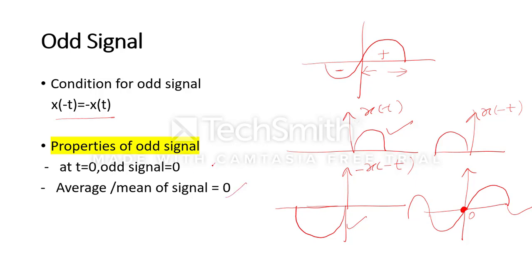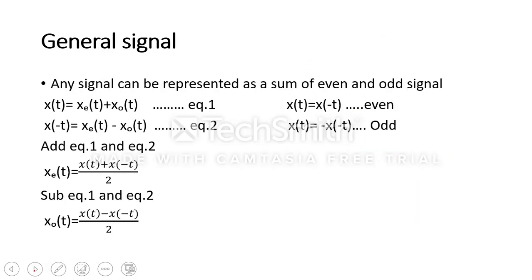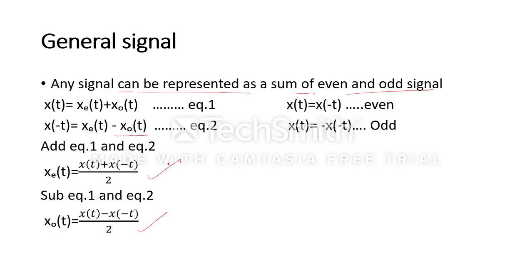Any general signal can be represented as the sum of an even and an odd signal. So if any signal x(t) is given, we can bifurcate it into even and odd components. The formula for the even part is: x_e(t) = [x(t) + x(-t)] / 2, and the odd part is: x_o(t) = [x(t) - x(-t)] / 2.